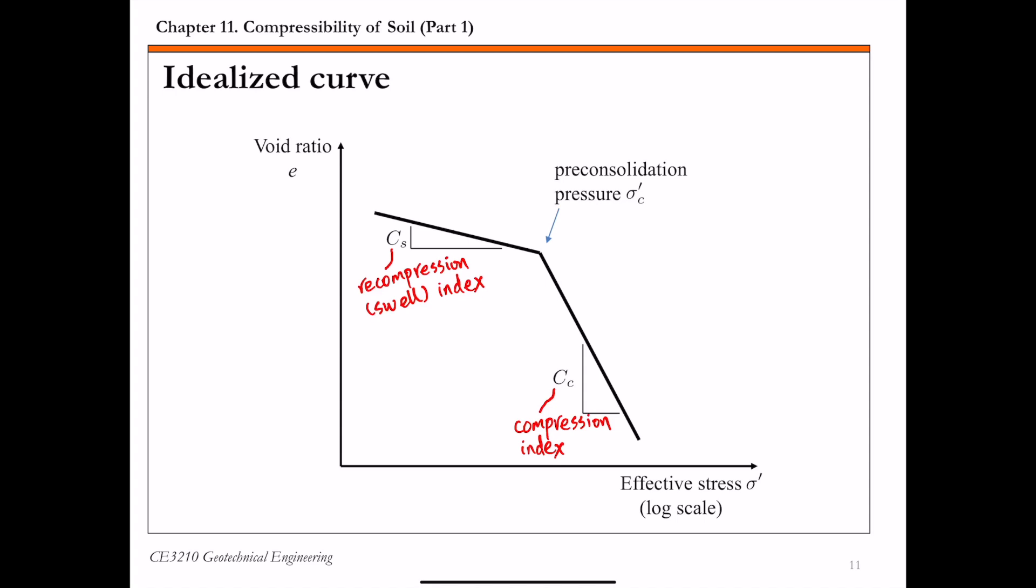This is an idealized curve of the previous loading, unloading, and reloading behavior. So basically we idealized that loading, unloading, and reloading portion with two straight lines. So the steep portion, so this is the initial loading curve. So the slope of this loading curve, we call C sub C, and this is called the compression index.